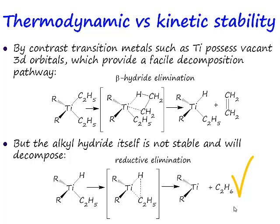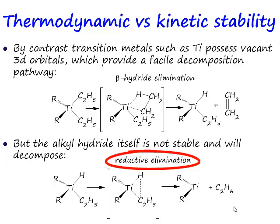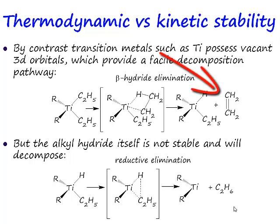Why is this process called reductive elimination? What's the oxidation state of titanium in this complex here? It's titanium in oxidation state 4. What's the oxidation state of titanium in this complex here? 2. So this has gone from titanium 4 to titanium 2 — from 4-coordinate to 2-coordinate — and we call that process reductive elimination. This chemistry has eliminated one equivalent of alkene in a beta-hydride elimination step and one equivalent of alkane in a reductive elimination step.